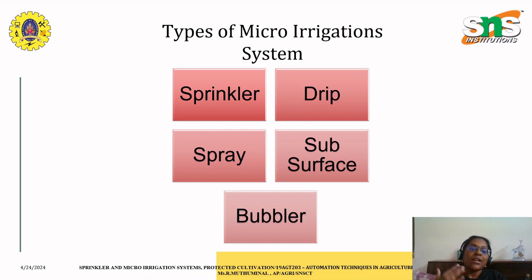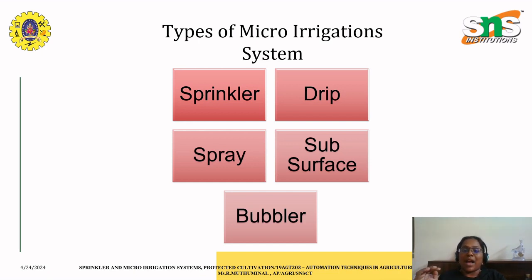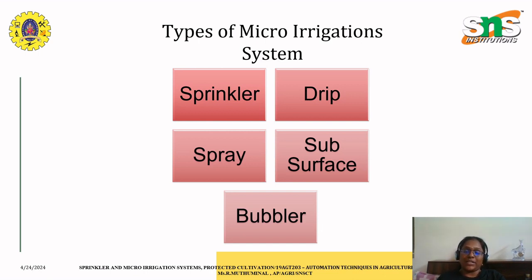The next benefit is dust suppression, where sprinkler systems help control dust on roads, construction sites, and other open areas by wetting the surface. It also helps in cooling outdoor spaces such as parks, sports fields, and recreational areas. It is also cost-effective: while initial installation costs are significant, sprinkler systems can be automated and require relatively low maintenance, resulting in long-term cost savings. This also helps provide increased crop yield, which is why sprinkler irrigation systems are most commonly used.